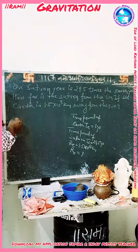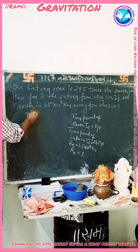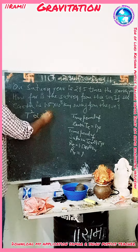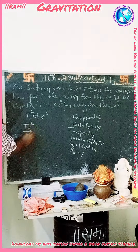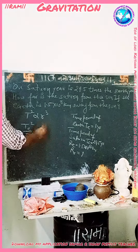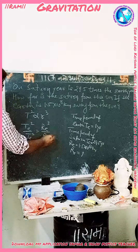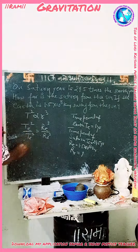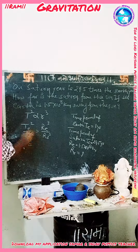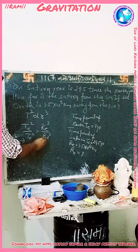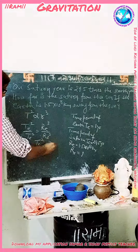According to Kepler's third law of planetary motion, T squared is proportional to R cubed. Therefore, Te squared upon Ts squared is equal to Re cubed upon Rs cubed. Now we will make a formula from this.